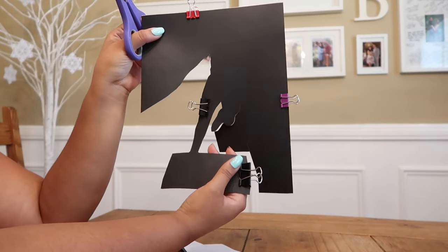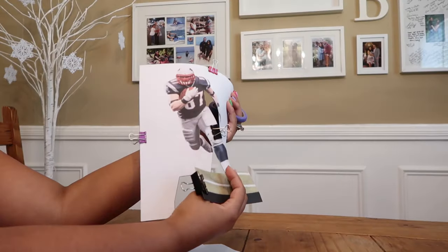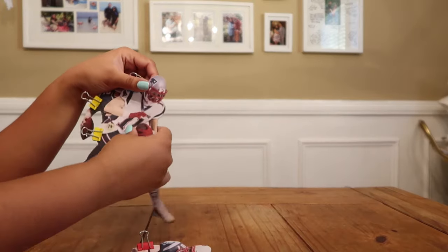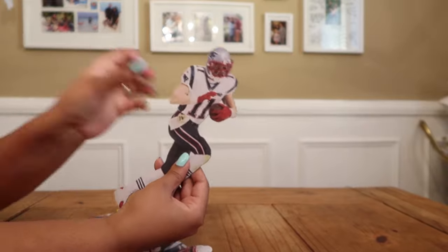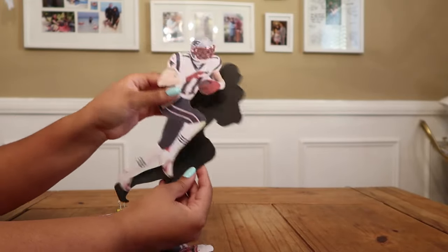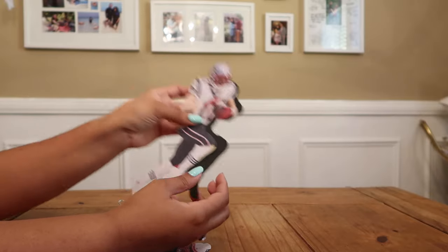The back image is coming out exactly as the front. Alright, so once you cut out all of your images you can go ahead and remove those binder clips and your silhouette in the back is the exact same shape as your image.